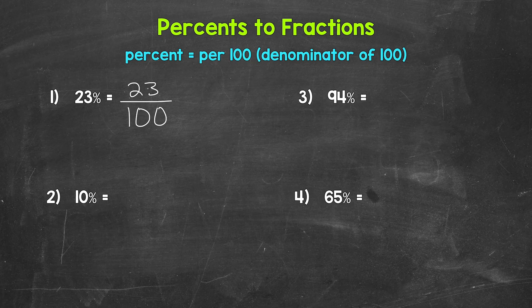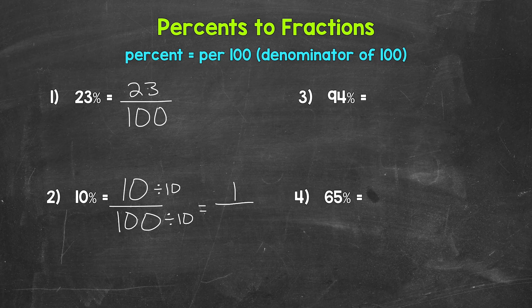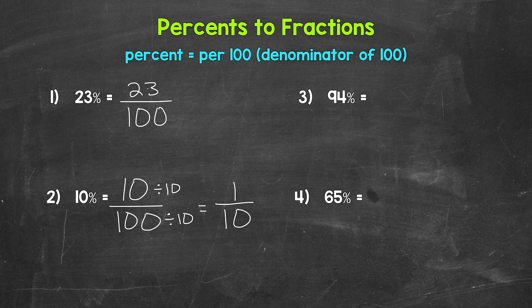Let's move on to number two, where we have 10%. We drop the percent symbol and put this over 100: 10 over 100, 10 hundredths. That's 10% as a fraction, but we can simplify here. We have a greatest common factor of 10, so we divide the numerator and denominator by 10. 10 divided by 10 gives us 1, and 100 divided by 10 gives us 10. So we get one over 10, one-tenth, which is in simplest form.